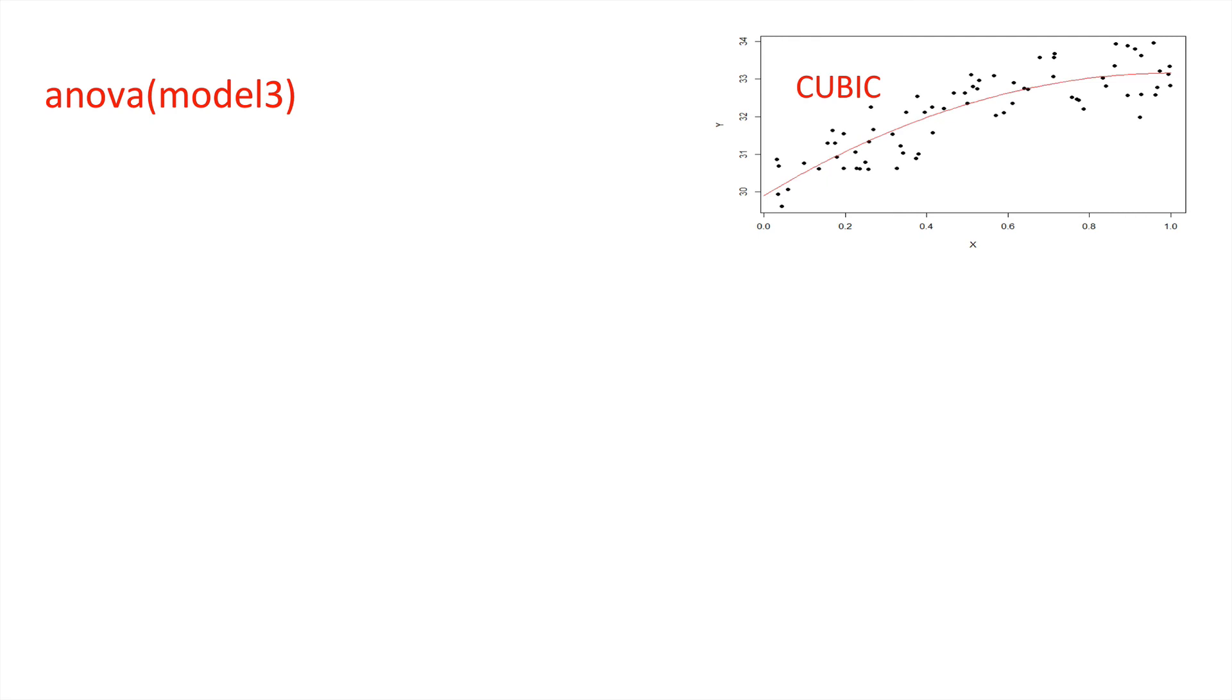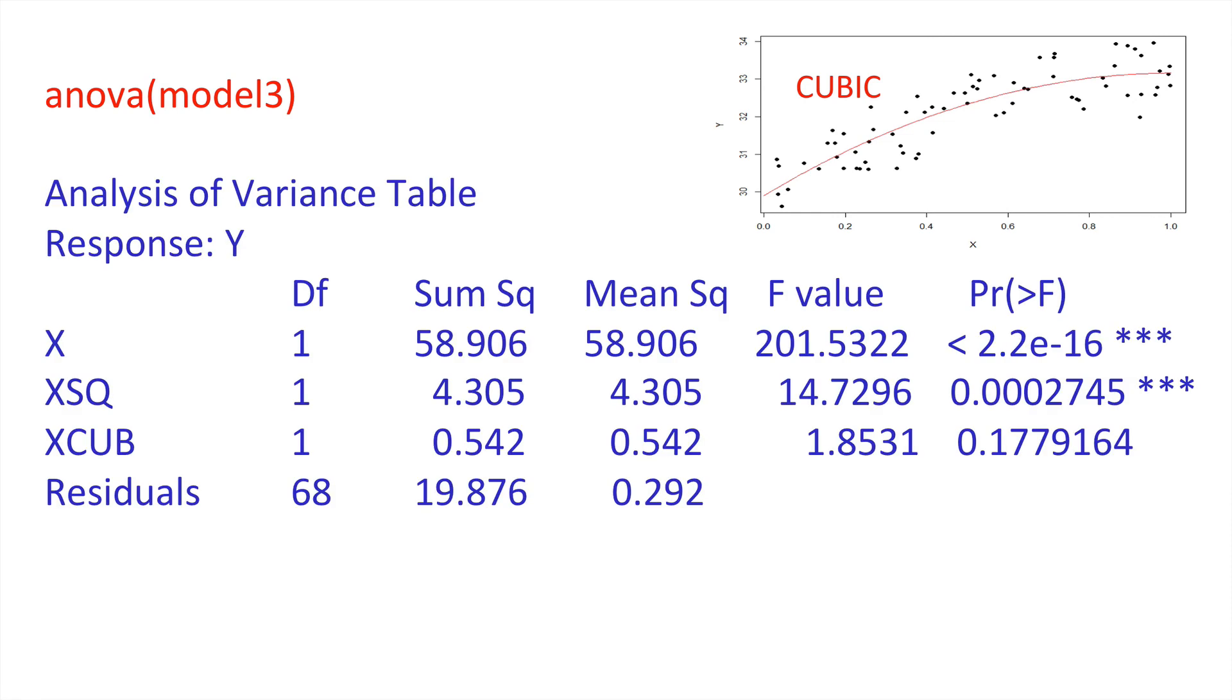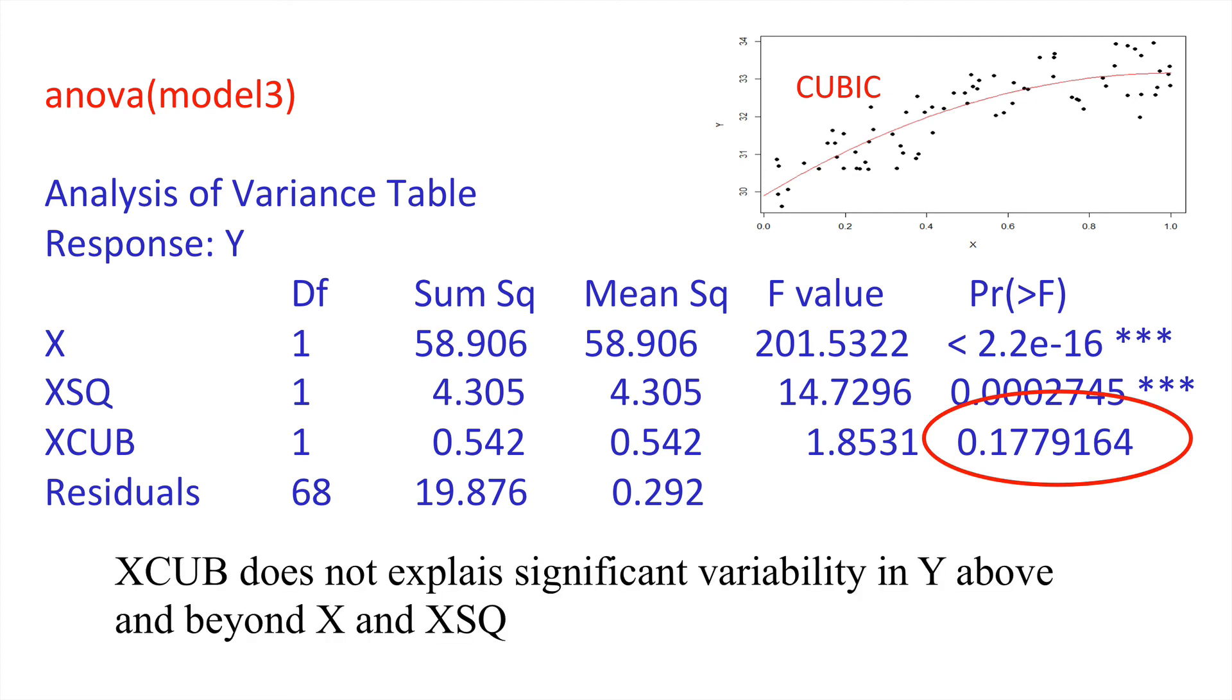Now, we can ask about the cubic model that we have fitted. There's the graph of it and here is the analysis of variance. You'll remember that we're using type 1 sum of squares. And so, what we can see here is x is highly significant. x squared is highly significant once we take into account the effect of x. But x cubed is not significant once you take into account the role of x and x squared. So, x cubed does not explain significant variability in y above and beyond x and x squared.